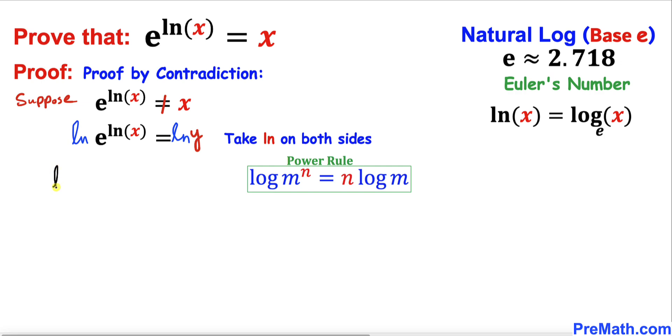This equals the right-hand side, which is natural log of y. And now we know that the natural log of e is always equal to 1. So therefore we can write natural log of x times 1 equals natural log of y.